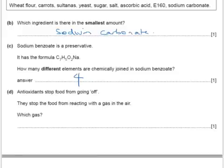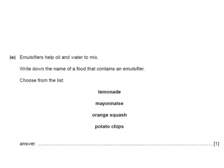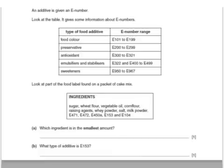Antioxidants stop food from going off — they stop food from reacting with a gas in the air. Which gas? It's in the name: antioxidants, so it's oxygen. Emulsifiers help oil and water to mix — write down the name of a food that contains an emulsifier from the list. The only choice here is mayonnaise. An additive is given an E number — look at the table. Which ingredient is in the smallest amount? It will be last on the label, which is E104.